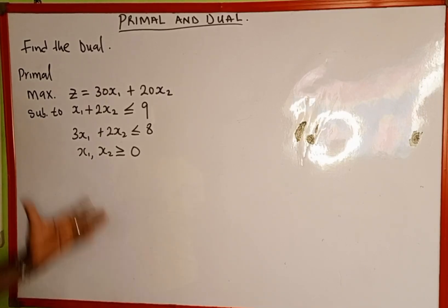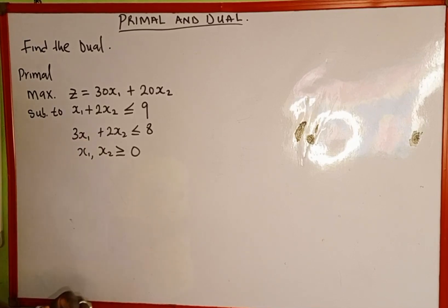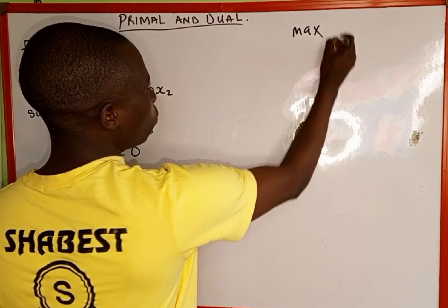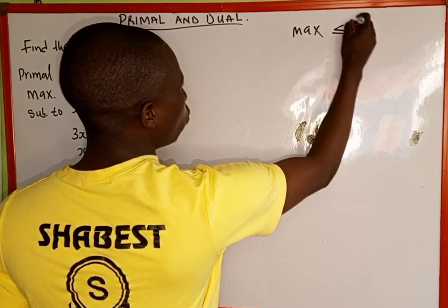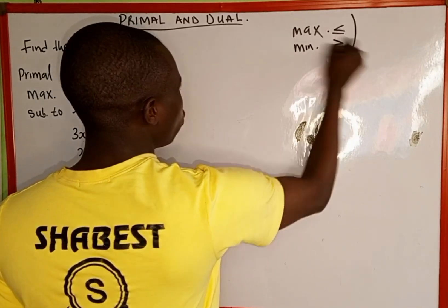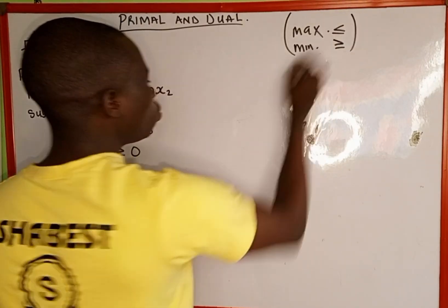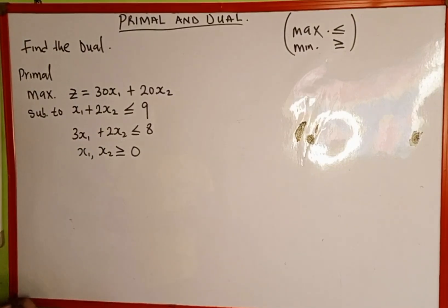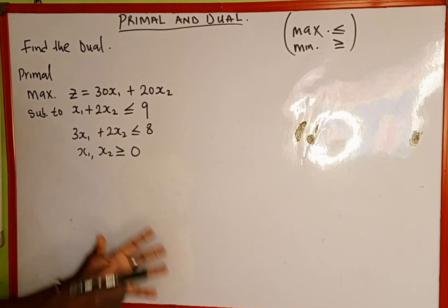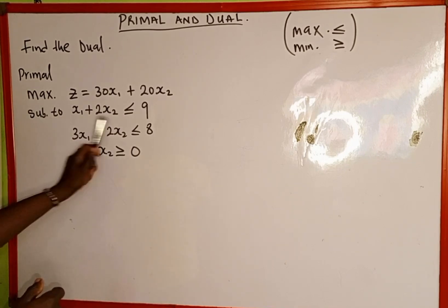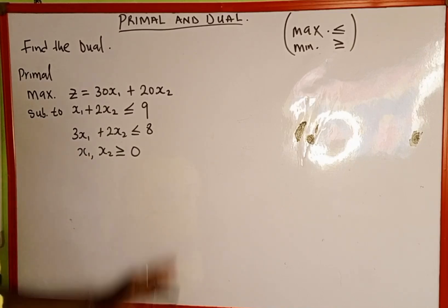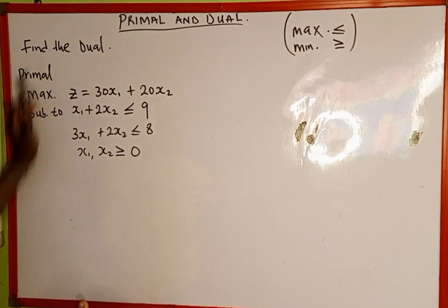Before we move further, the first two conditions we need to know: when a problem is given in a maximum form, the constraints are going to be less than or equal to; and if it is minimum, they are going to be greater than or equal to. Since this problem is given in maximum form and both constraints are less than or equal to, this problem is in the correct form. Now we can go ahead and find the duality.